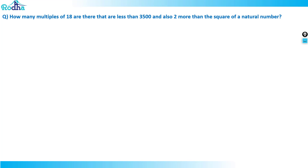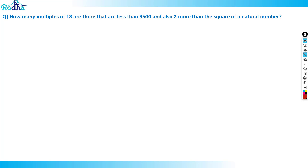How many multiples of 18 are there that are less than 3,500 and also 2 more than the square of a natural number? So, look at this question here, guys — how to approach it. Multiples of 18 that are less than 3,500 and 2 more than the square of a natural number.